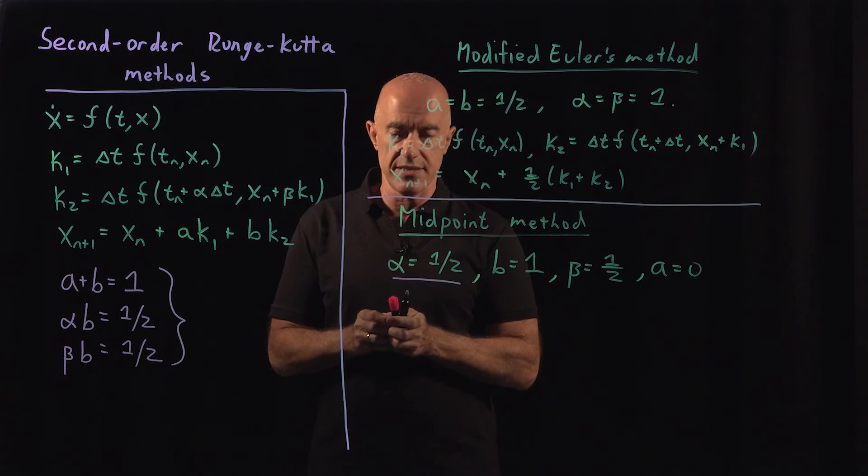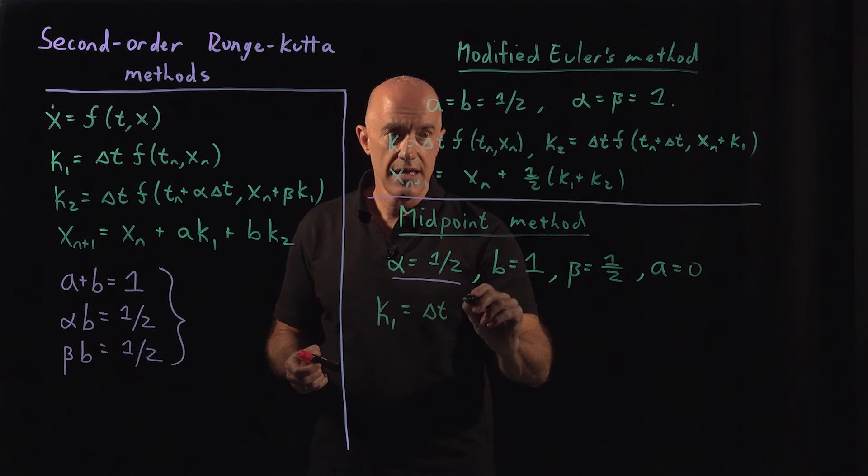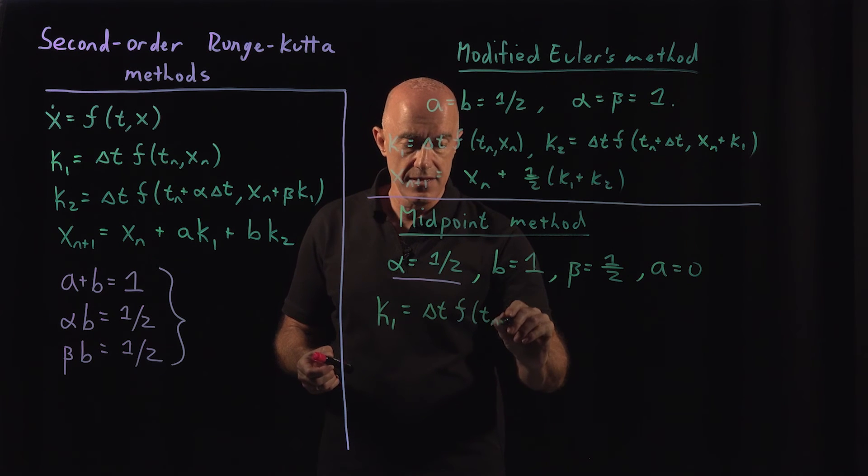So then what does this method look like? So again, k1 is the same. So k1 equals delta t f of (t_n, x_n).